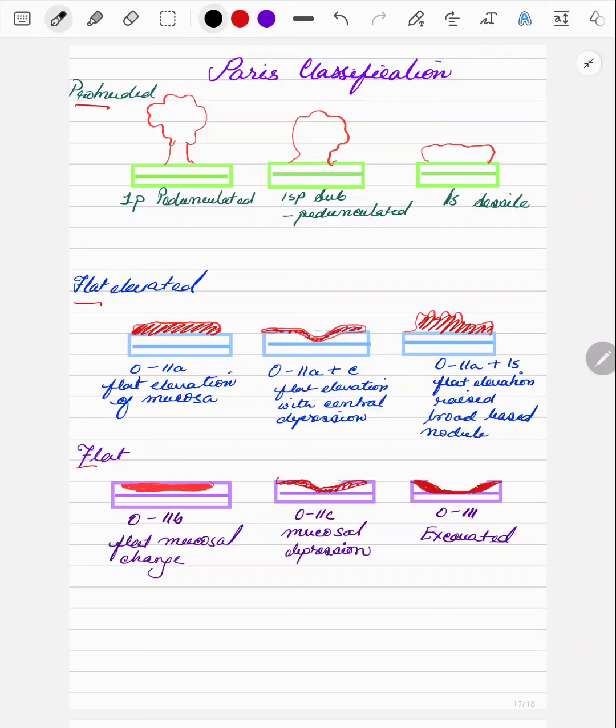So the protruded one is 1P pedunculated polyp, 1SP is subpedunculated and 1S is sessile polyp. Flat elevated and flat polyps are divided into two.